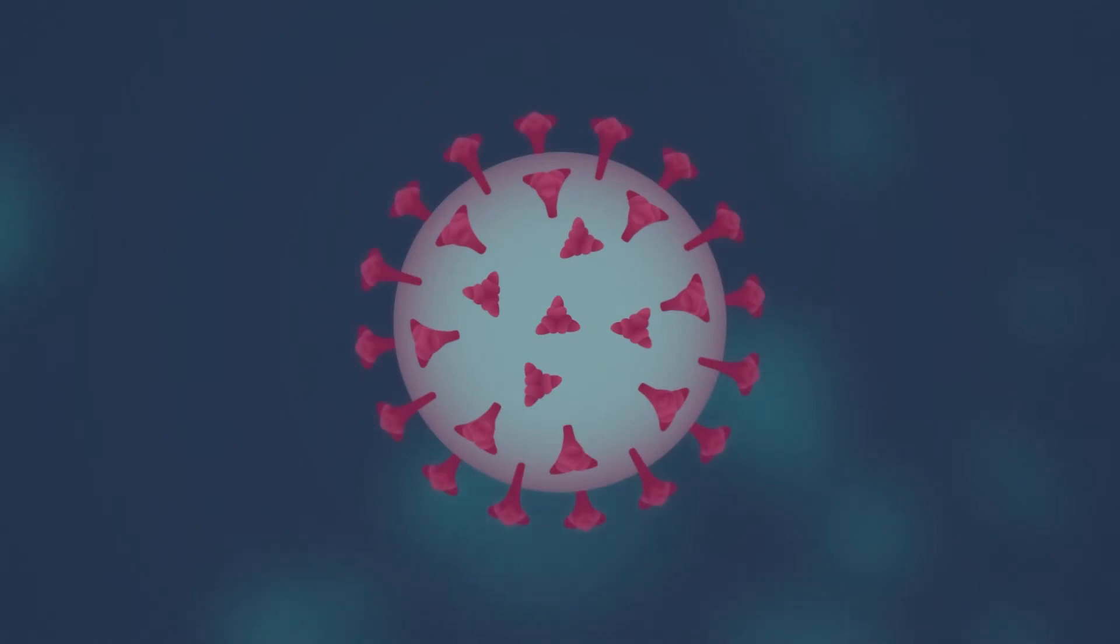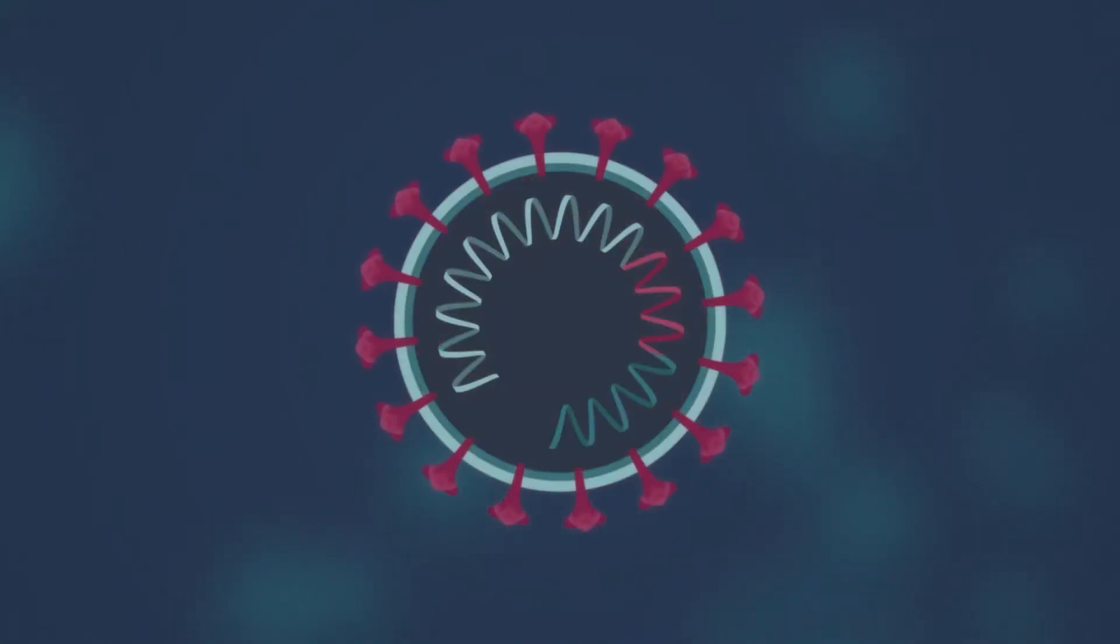So, how do adenovirus-based vaccines work? This type of vaccine takes the part of the virus RNA that is responsible for reproducing the spike proteins. Then it makes it more stable by attaching it to some DNA from a sample virus that doesn't affect humans.